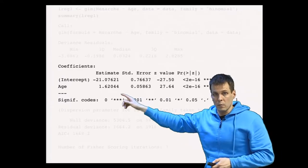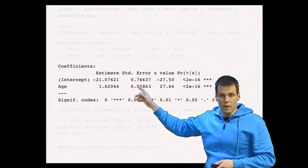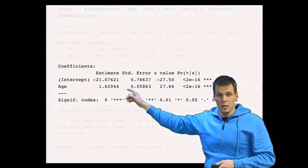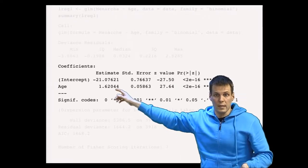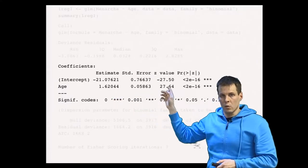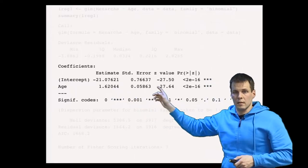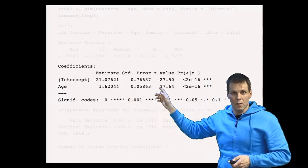We have the estimate. Then we have standard error, which quantifies how much the estimate is likely to change from one sample to another if we repeat the study over. We have a z-value, which is the ratio of the estimate divided by standard error. So the z-value is the same as the t-value in regression analysis.